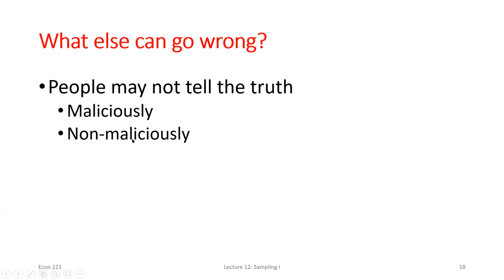Non-malicious lying is the idea that if I ask somebody what their income is and they tell me they rounded up to $60,000, they probably don't make exactly $60,000 — they're just giving me a ballpark. They're giving me their best recollection of whatever I'm asking them about.